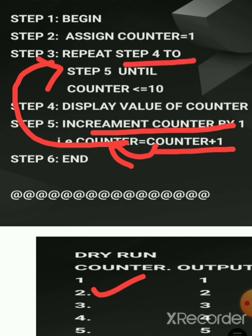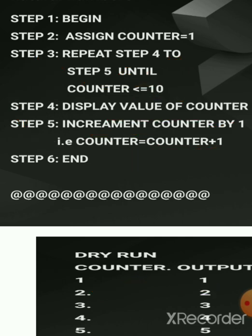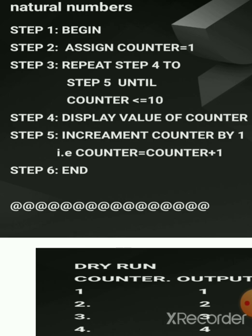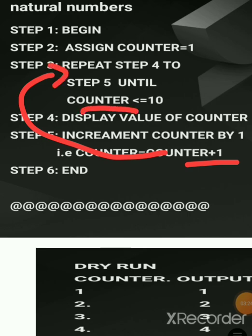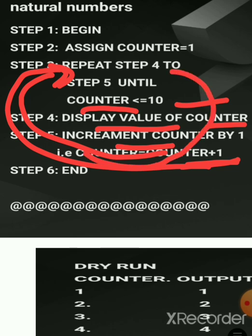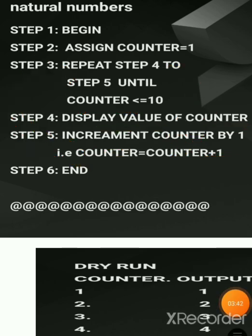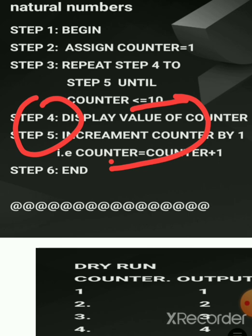Counter is now two, so it goes back to step three. Steps four and five repeat again: step four displays two. Counter increments to three, goes back up, checks three is less than 10 — yes — displays three, increments to four, and so on. This continues, displaying and incrementing the counter again and again until the counter value becomes 11. When it becomes 11, it does not go into steps four and five — it stops the program.